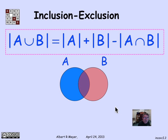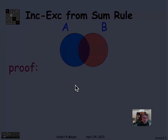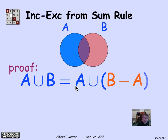So how do we prove the inclusion-exclusion principle for two sets? The size of A union B equals the size of A plus the size of B minus the size of A intersection B. The idea is to break up A union B into disjoint sets, because once they're disjoint sets, we can add up their sizes.